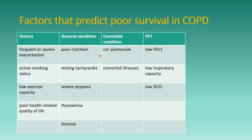Coming to the general condition: poor nutrition, resting tachycardia, severe dyspnea, hypoxemia and anemia, comorbid illness if any, and PFT showing low FEV1, low inspiratory capacity, and low DLCO — which all favor predicting poor survival in COPD patients.